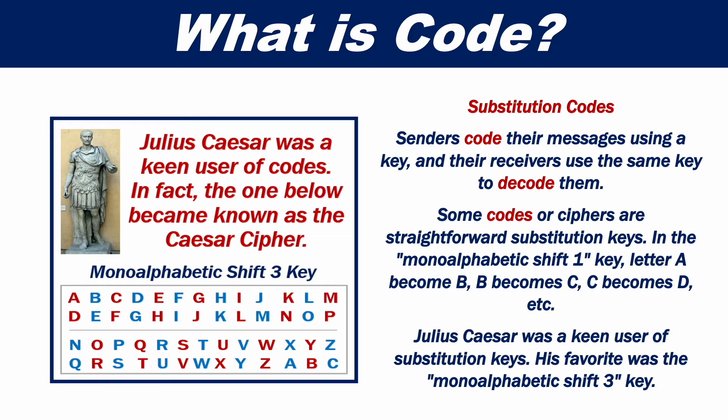In the Monoalphabetic Shift-1 key, letter A becomes B, B becomes C, C becomes D, and so on.